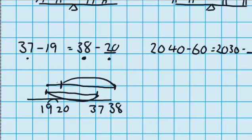2040 minus 60 is equal to 2030 minus something. Just running out of room there a little bit. Well, just like last time I'm going to draw a number line, I'm going to put 2040 on it and 60, and I'm imagining the distance between those two numbers.